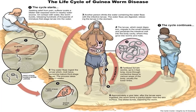These first-stage guinea worm larvae would be ingested by tiny water fleas, that is, cyclops. Inside these water fleas, they will molt twice and mature into third-stage larvae. This process of molting from first to the third stage usually takes 10 to 14 days, approximately two weeks of time. Once they have molted, the person consumes water which is already affected by these water fleas.